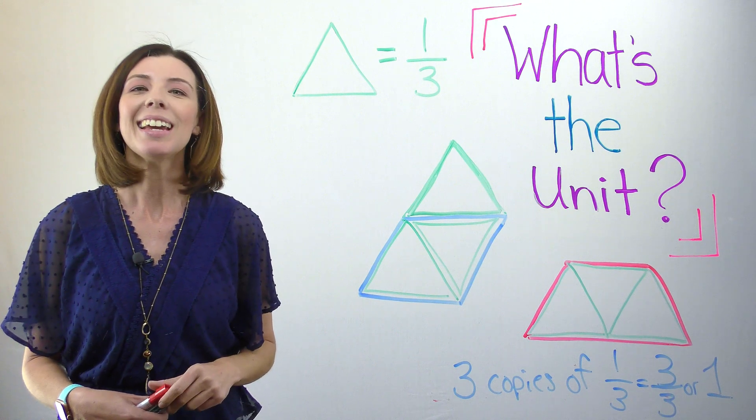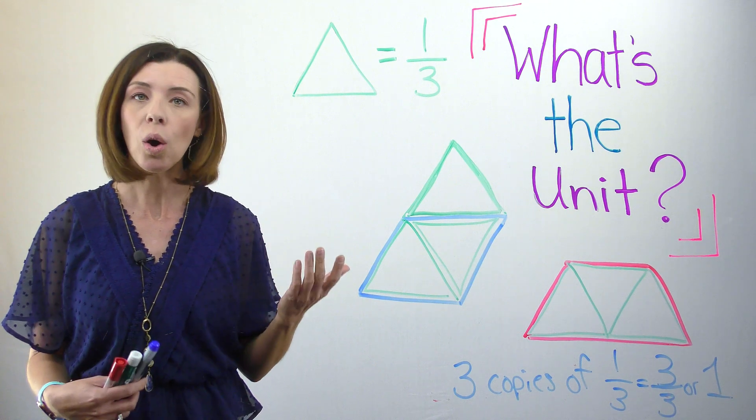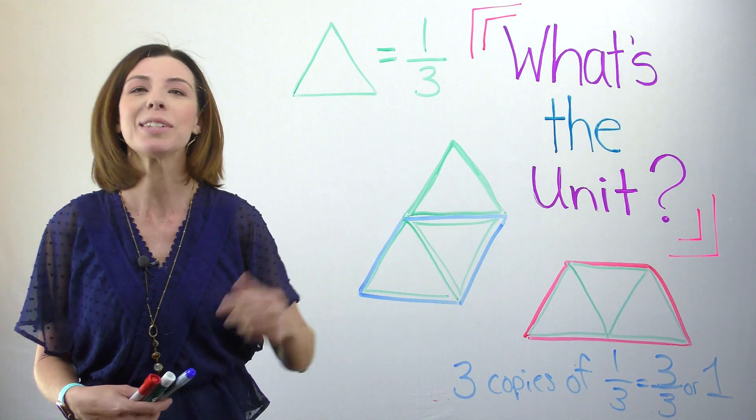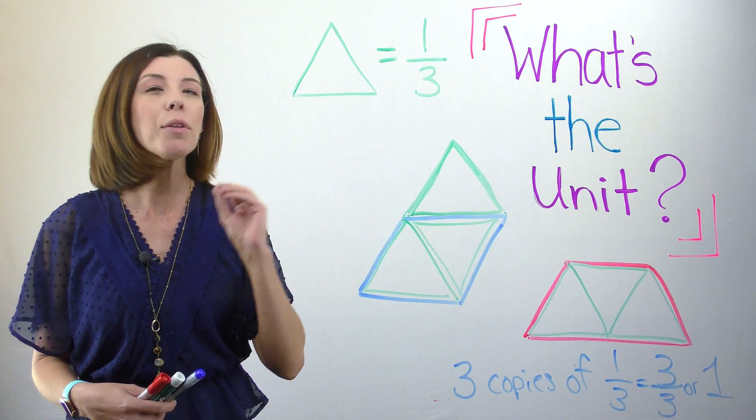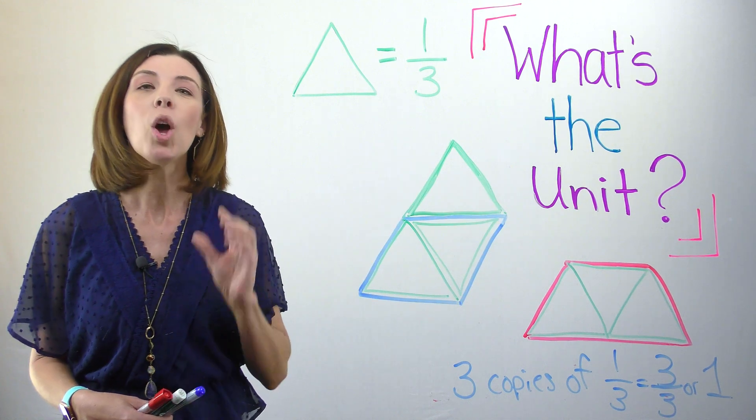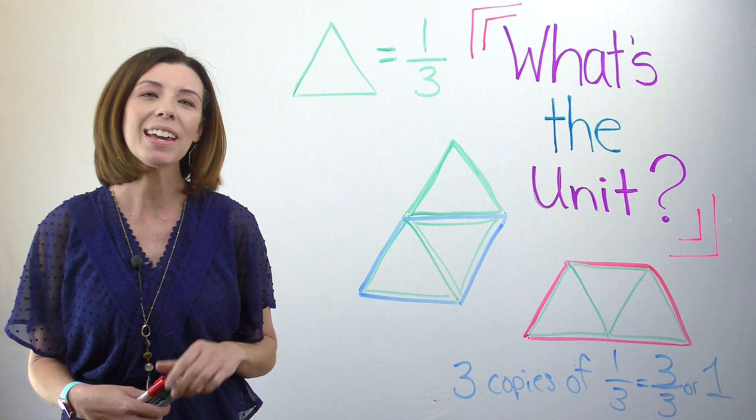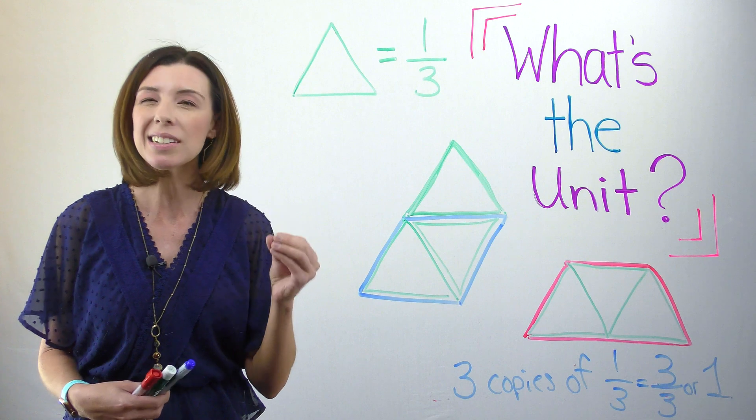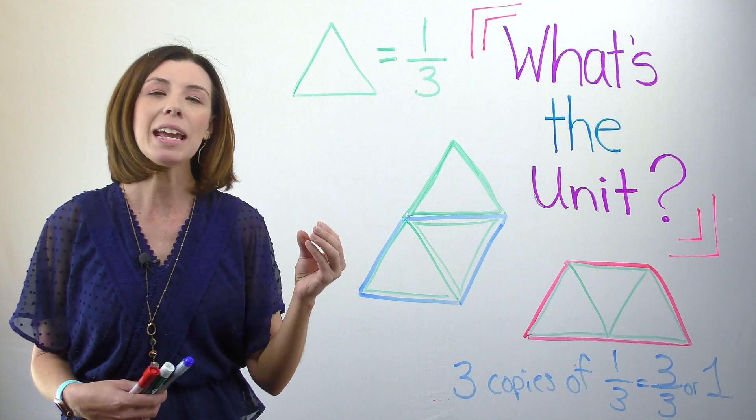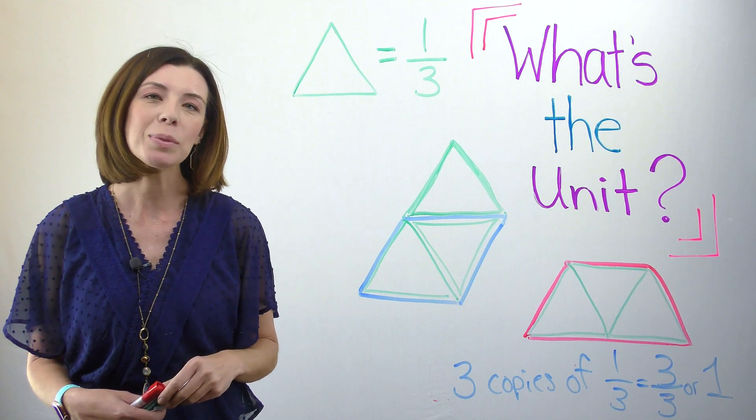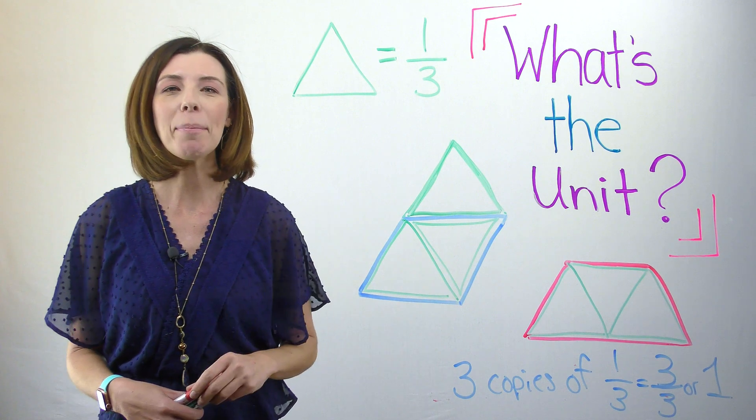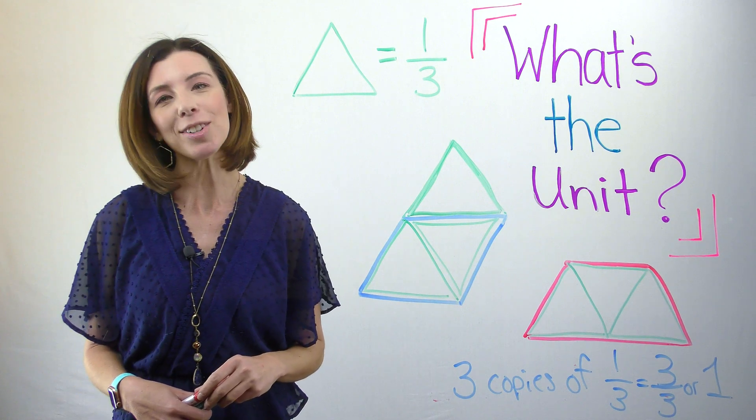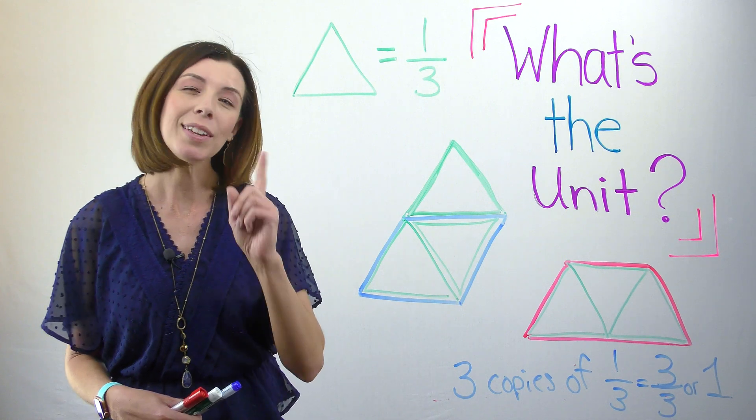Hopefully you're getting an idea of the pattern of how to figure out what the unit is on something. A lot of times it's easier to break it down into a piece that you can easily figure out the name of and then think of that in terms of copies of. Hopefully you've got a better idea of how to find the fraction name for a piece when the unit continues to change.